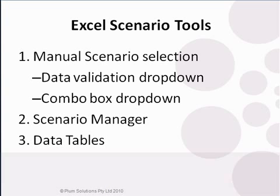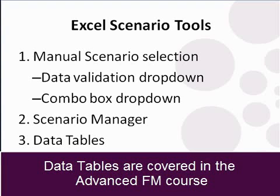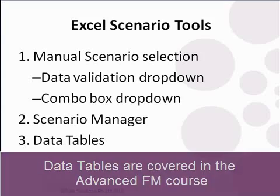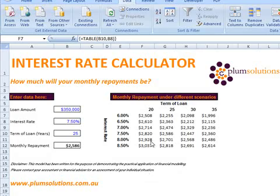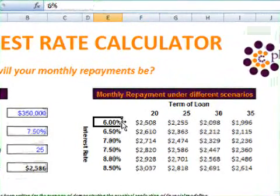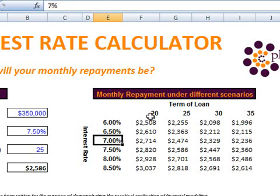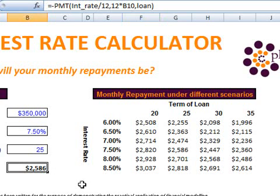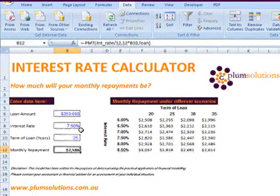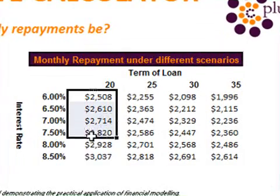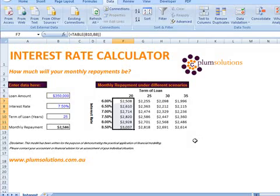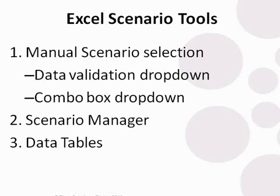Data tables are a completely different kettle of fish — they will actually show multiple results for a scenario in one table. This is an example of a data table where you have a scenario of interest rates at 6%, 6.5%, and 7%, showing the multiple results of what your monthly repayment would be under all of these different interest rates. So instead of having to change the interest rate manually, you can see the results simultaneously. Data tables are probably one of the more complex tools in Excel modeling. I just wanted to give you a brief overview of all the different types of tools available in scenario analysis — in order to call yourself an expert financial modeler, you need to know all the tools available.